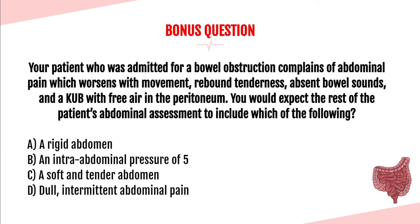Bonus question. Your patient admitted for bowel obstruction complains of abdominal pain worsening with movement, rebound tenderness, absent bowel sounds, and a KUB showing free air in the peritoneum. Which finding would you expect on the rest of the abdominal assessment? A. A rigid abdomen. B. An intra-abdominal pressure of 5. C. A soft and tender abdomen. Or D. Dull intermittent abdominal pain. The answer is A — a rigid abdomen. This patient has all signs of gastric perforation.